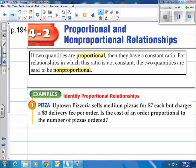If two quantities are proportional, they have a constant ratio. Constant means the same ratio. For relationships in which this ratio is not constant, if it's not the same, the two quantities are said to be non-proportional. Some people might say not proportional, but it's non-proportional. If they're the same, proportional. If they're not the same, non-proportional.